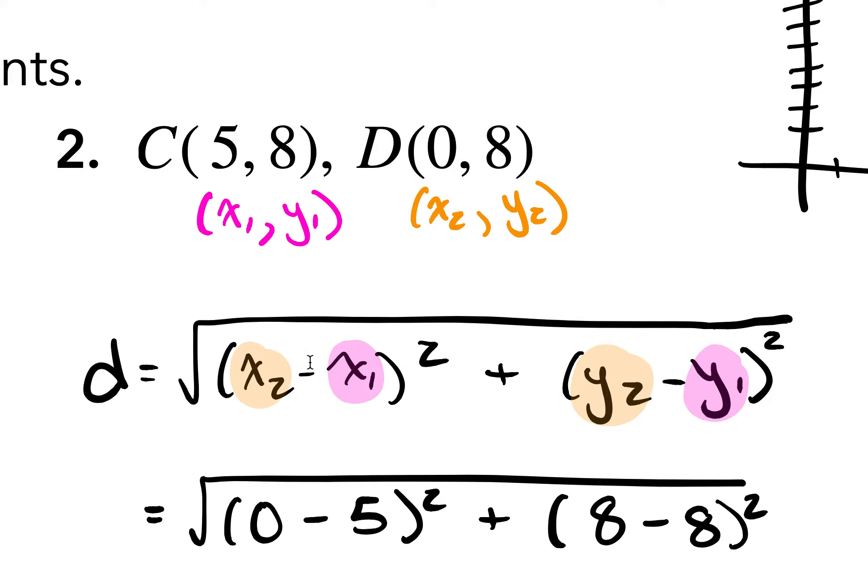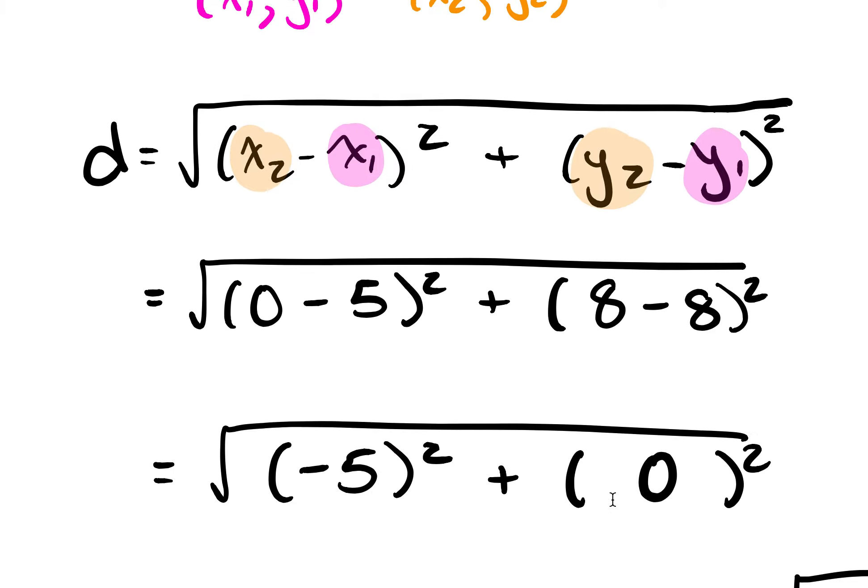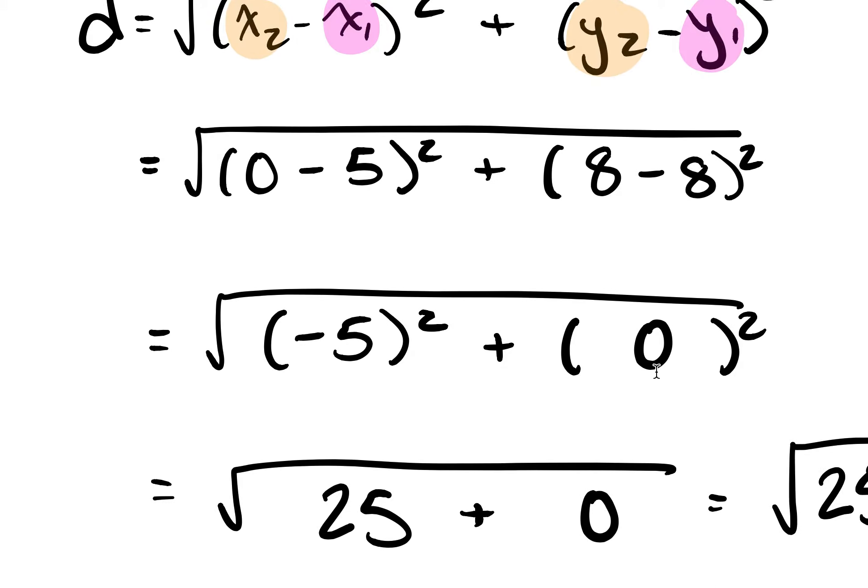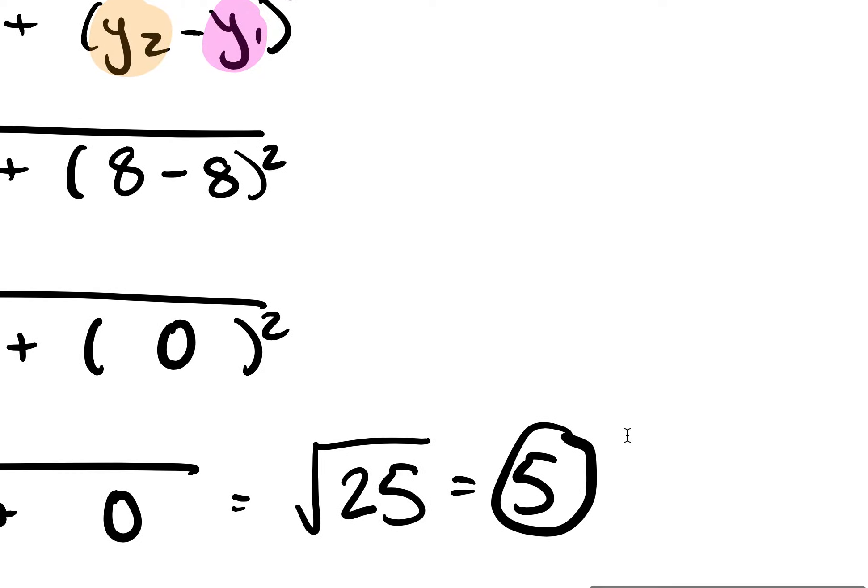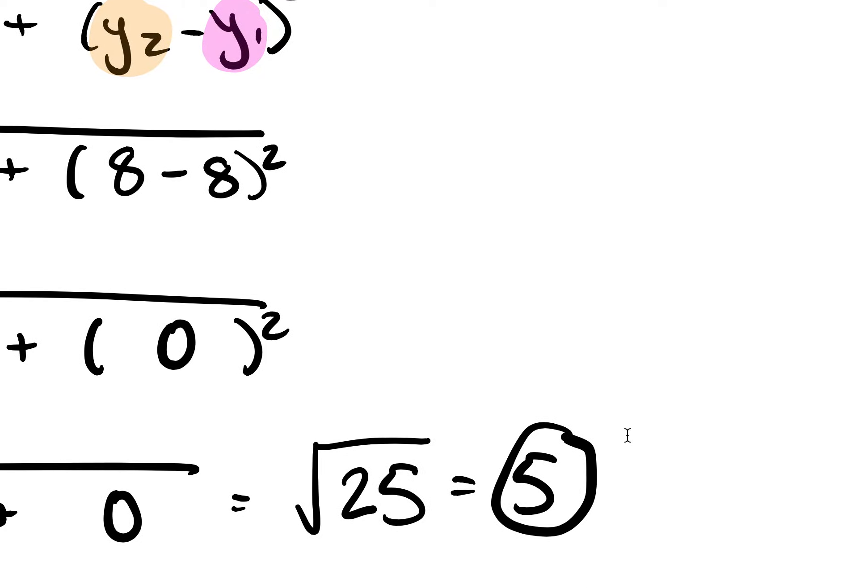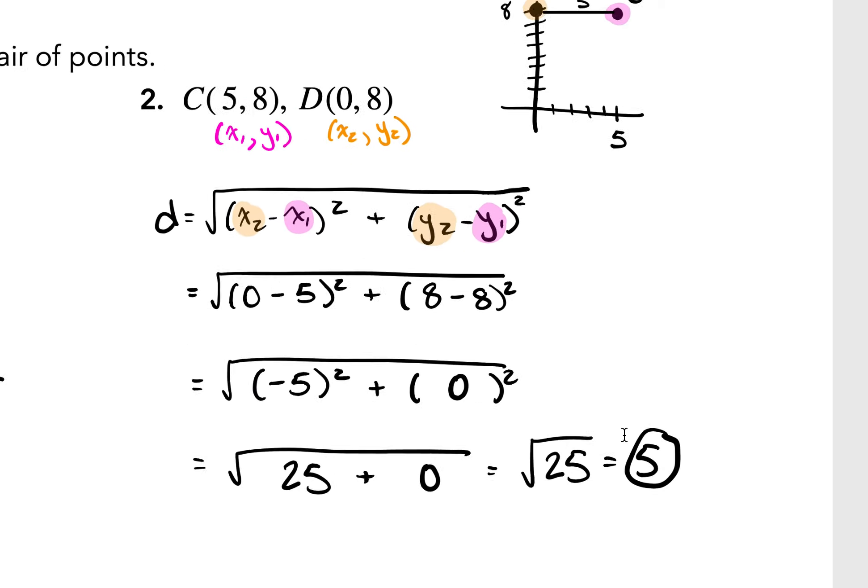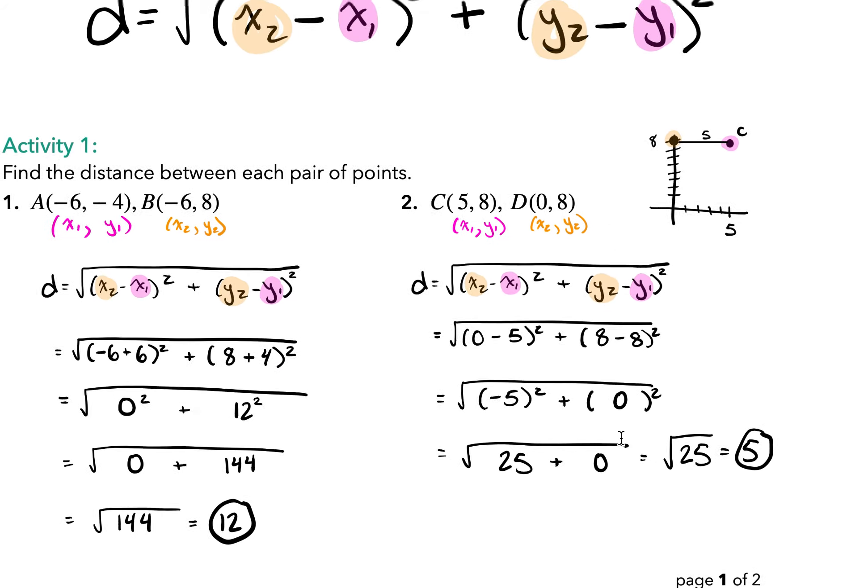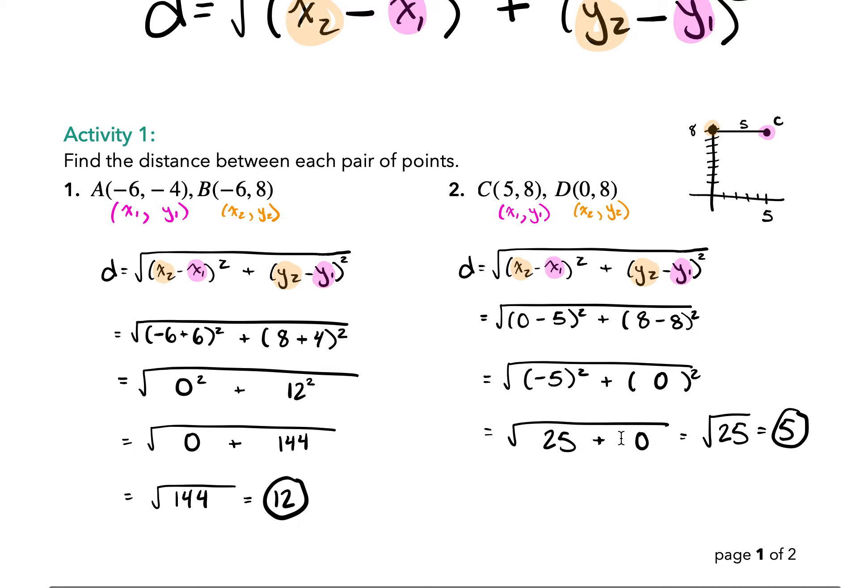x2 is 0, x1 is 5, y2 is 8, y1 is also 8. So that's going to work out real nice. It's going to be 0. So 0 minus 5 is negative 5, and 8 minus 8 is 0. We have negative 5 squared plus 0 squared is 25 plus 0, and the square root of all of that is 5. Sweet. I just gave you a thumbs up, but you can't see it. So that's how to plug numbers into the distance formula.